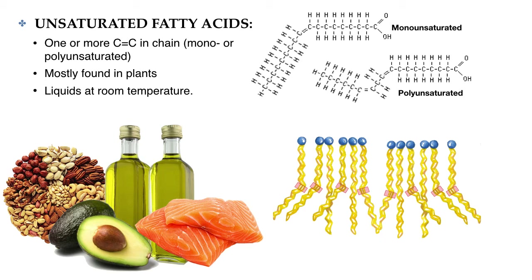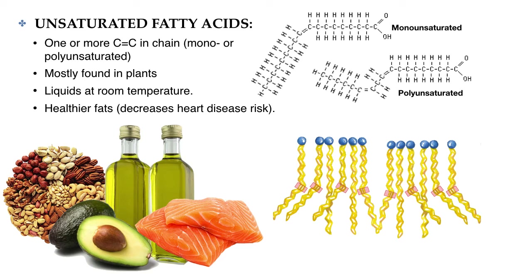By bending, they can no longer stack as close together, minimizing London dispersion forces and their attraction to each other. It is this difference between saturated and unsaturated fats that makes unsaturated fats healthier. The more double bonds, the healthier the fat — the more it decreases the risk of heart disease and cardiovascular disease in general.